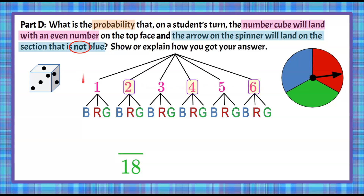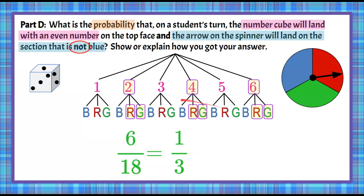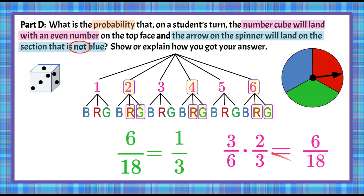Now we want all outcomes that are even and not blue: 2-red, 2-green, 4-red, 4-green, 6-red, 6-green. That gives us 6 out of 18 outcomes, which simplifies to 1/3. We can verify with multiplication: probability of rolling even is 3/6, probability of spinning not blue is 2/3. Multiplying gives 6/18, which simplifies to 1/3. The probability of rolling an even number and spinning not blue is 1 in 3.